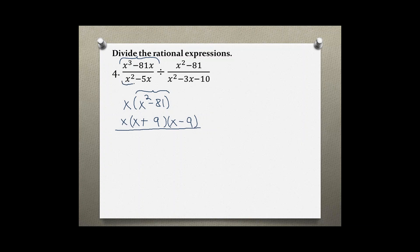Now the bottom one — I see they have a greatest common factor of x. Taking out an x, I am left with x minus 5. And that is all for this part.